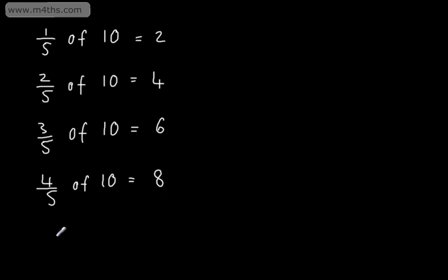Now, of course, if we did 5 fifths, 5 fifths is one whole, and of course, that would give us 10. If you want an easier way to remember it, without a calculator, divide by the bottom multiply by the top.